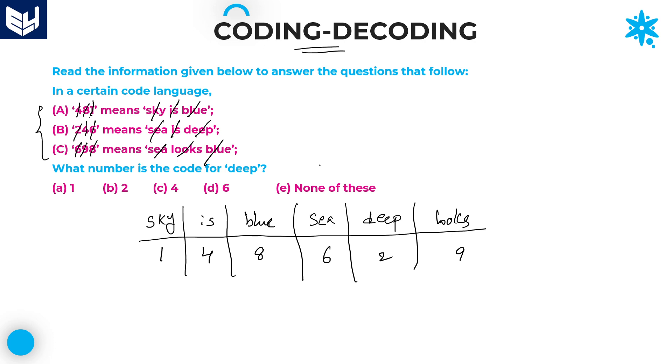These are the words and the respective numbers. Now you can easily solve the answers just by seeing the given word and the number. Which number code for deep? Deep equals two. Two is the answer, option B. Just by seeing the table directly you can get the answer.